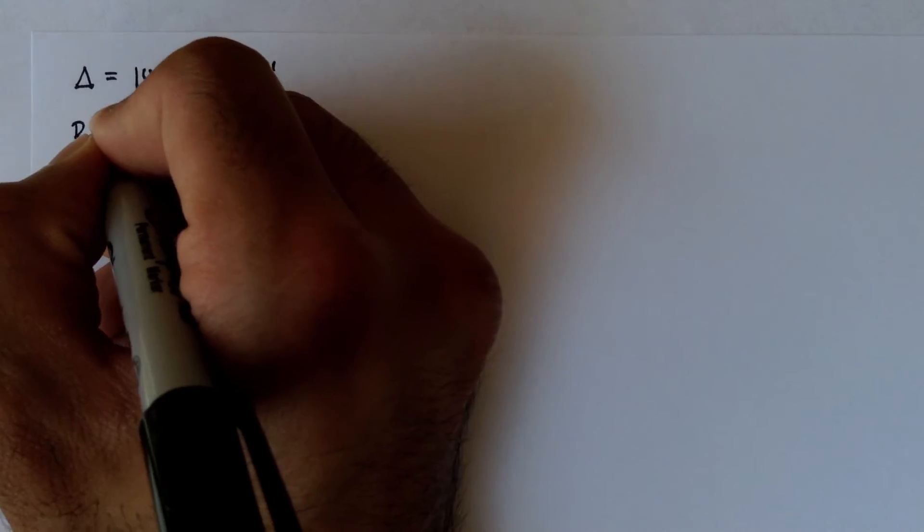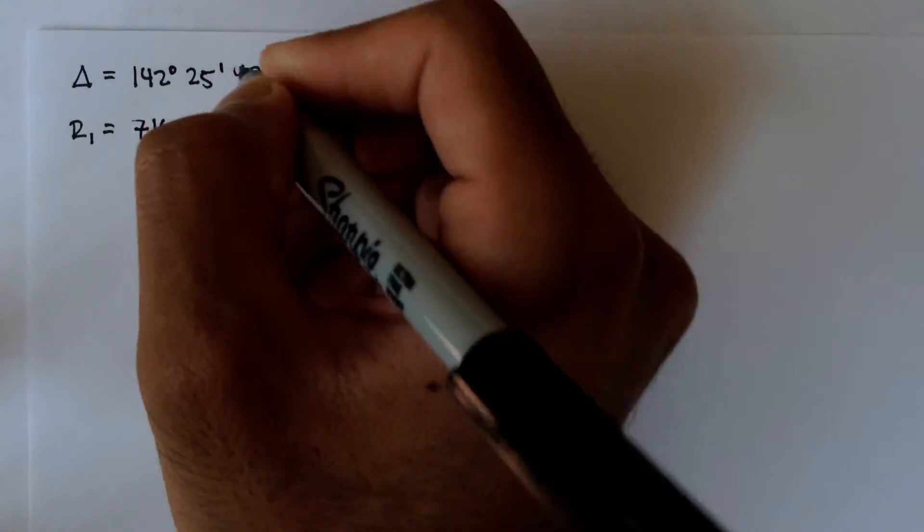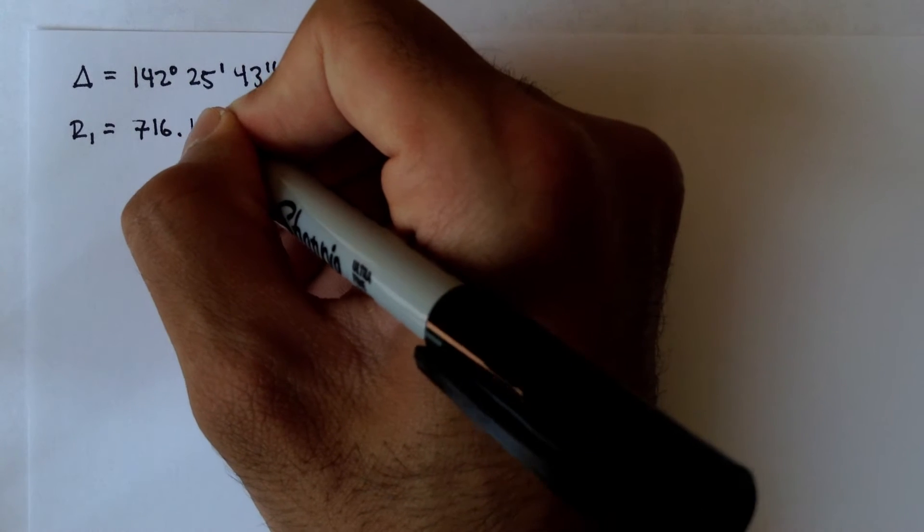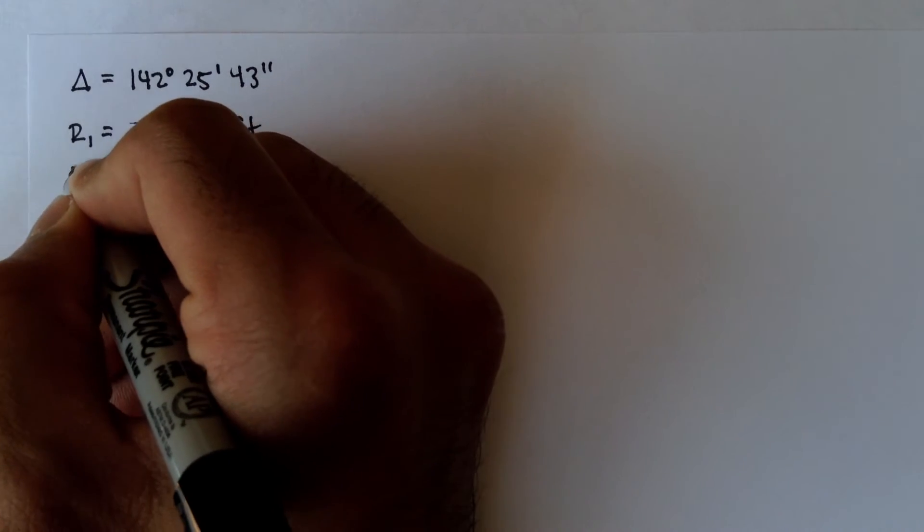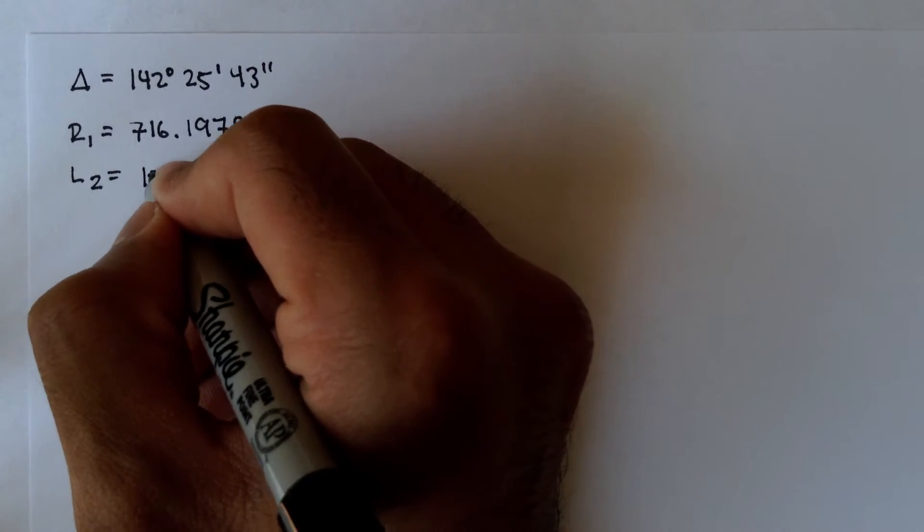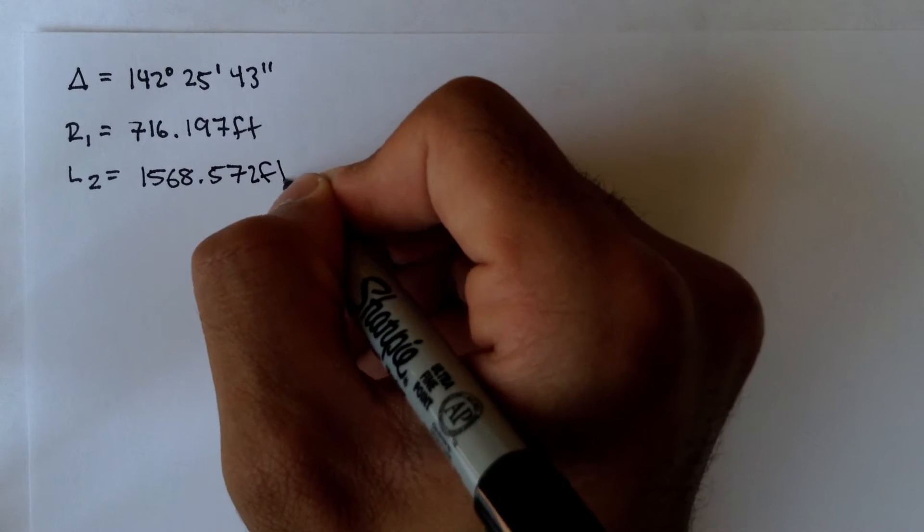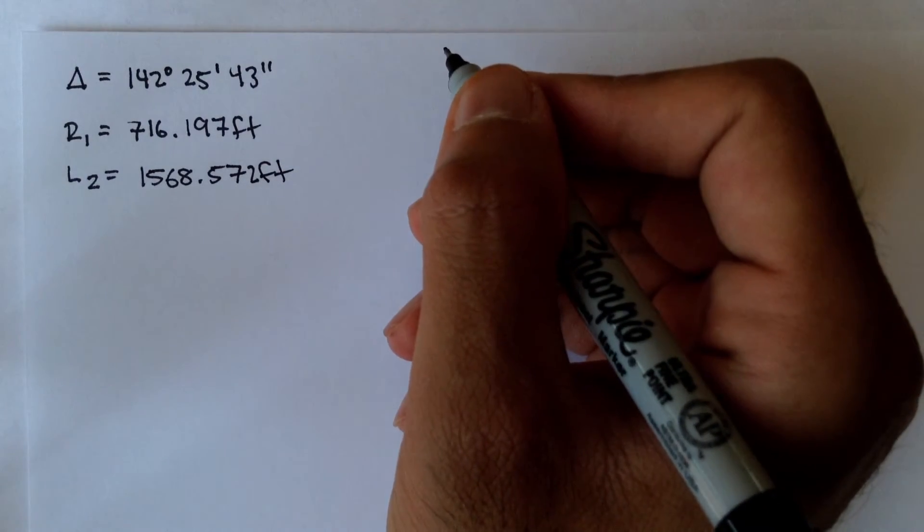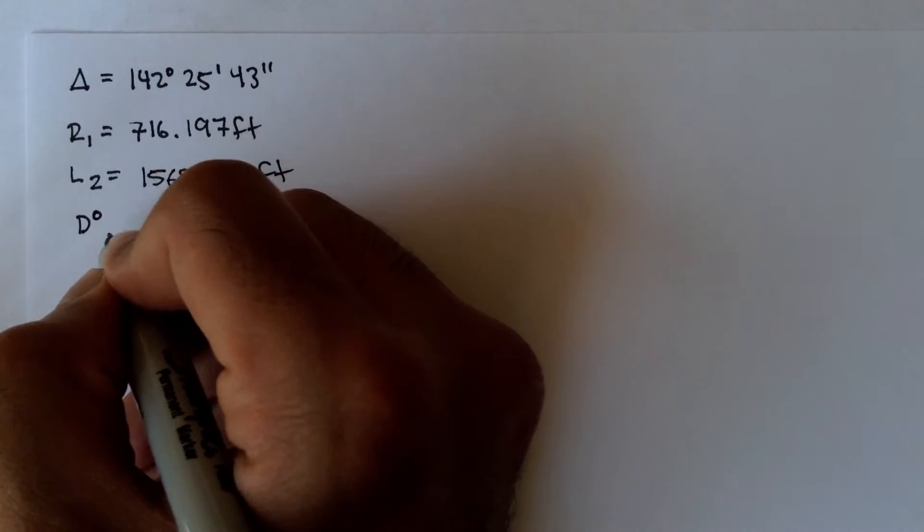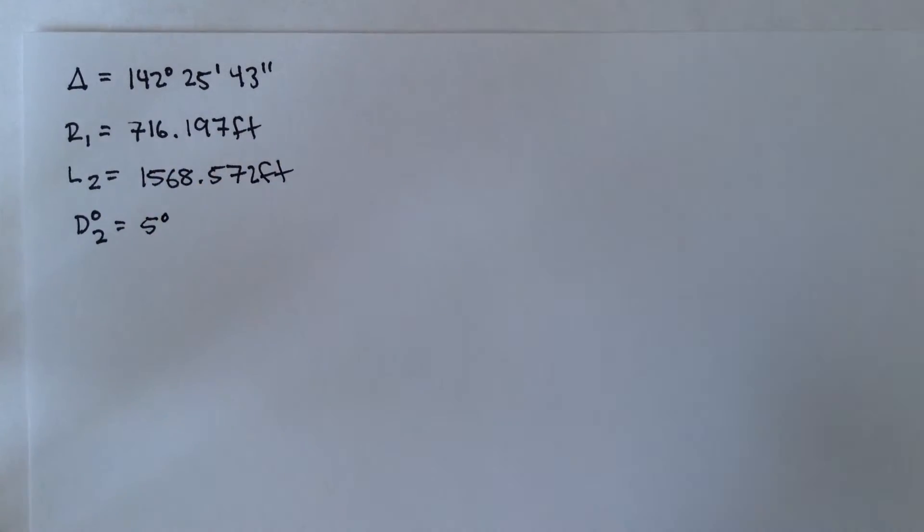Radius 1, so the radius of the first curve is given as 716.197 feet. And the length of the second curve is given as 1568.572 feet. And the degree of curvature for curve 2 is 5 degrees.